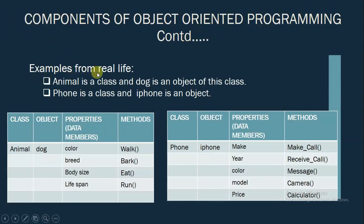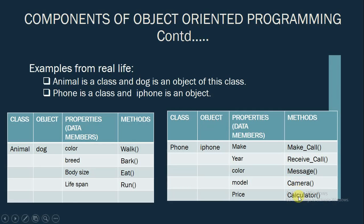Let us take a real-life example to understand the components of object oriented programming. If animal is a class, we can take dog as an object. Dog has certain properties like color, breed, body size, lifespan, etc., and methods like walk, bark, eat, run, etc. Taking another example of phone: if phone is a class, iPhone is an object. The properties of this object can be make, year, color, model, price, etc. The methods this object can perform are make call, receive call, message, camera, calculator, and many more.